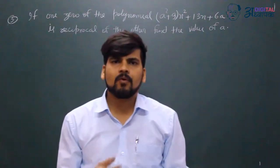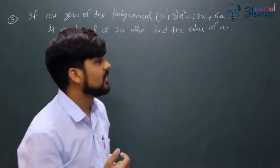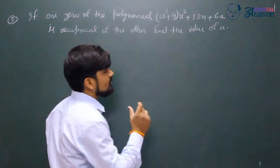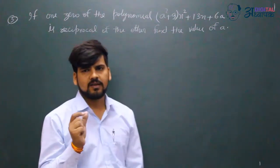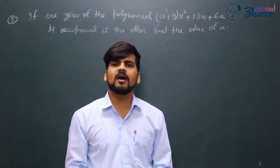The given question is a quadratic polynomial. We know that in a quadratic polynomial we have two zeros. Let us suppose the zeros be alpha and beta.